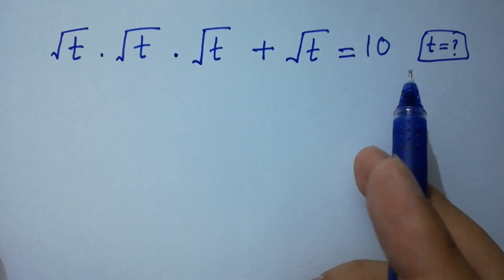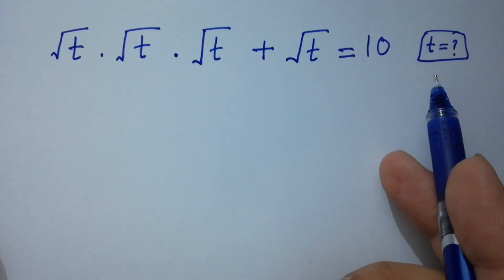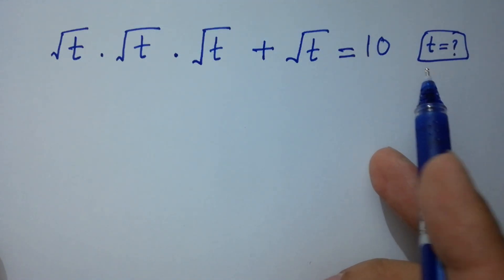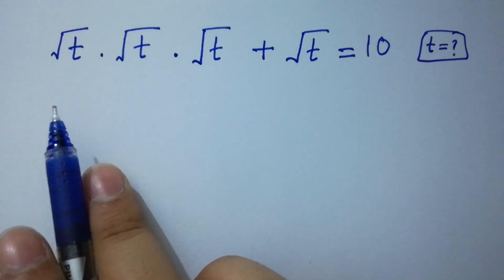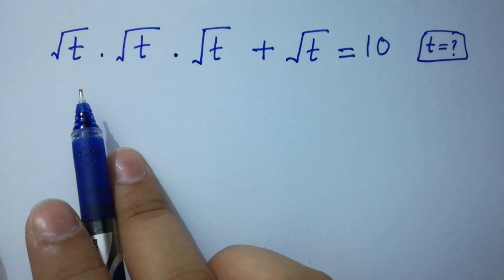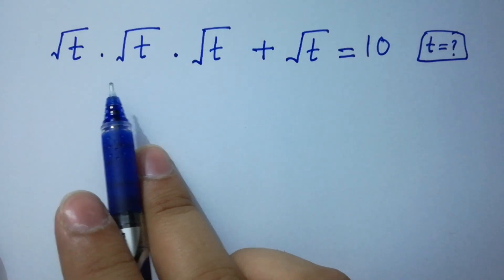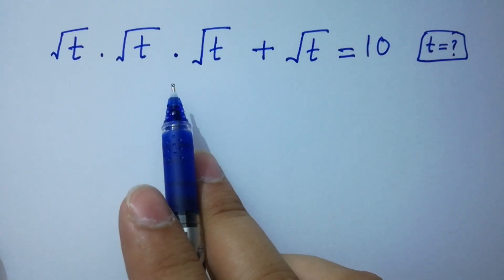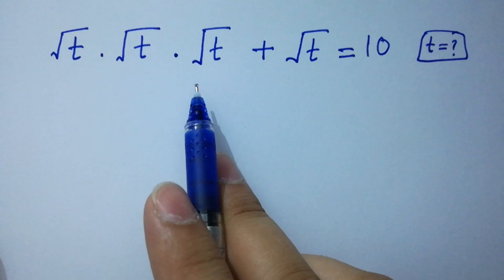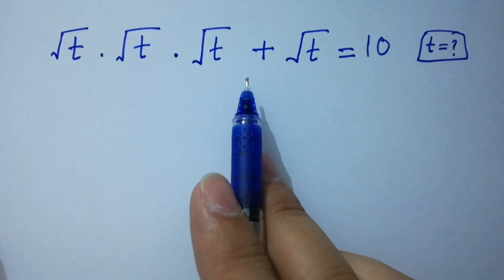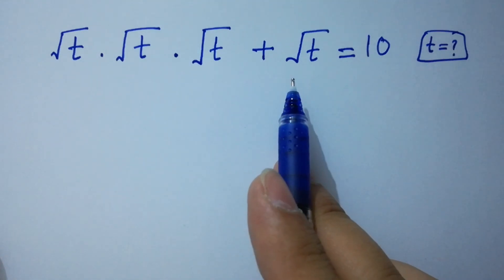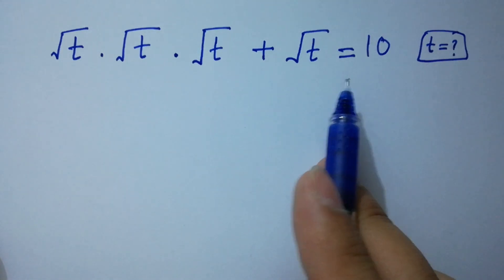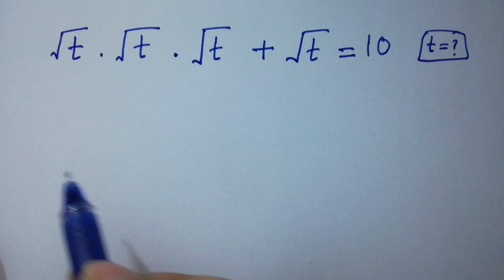Hello friends, find the value of t if square root of t times square root of t times square root of t plus square root of t equals 10. Let's have a solution.